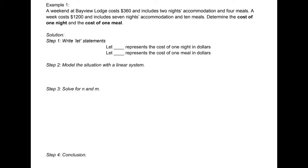Example 1: a weekend at Bayview Lodge costs $360 and includes two nights accommodations and four meals. A week costs $1,200 and includes seven nights accommodations and 10 meals. Determine the cost of one night and the cost of one meal.